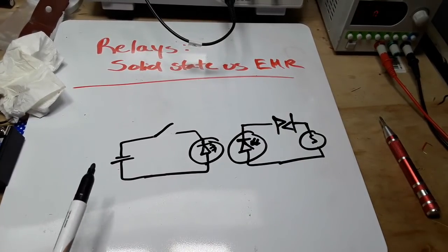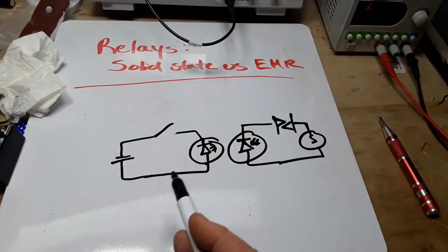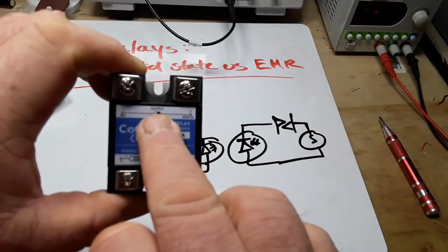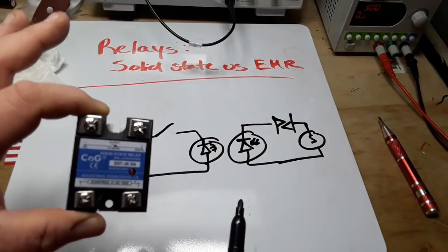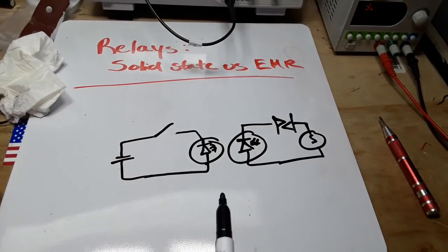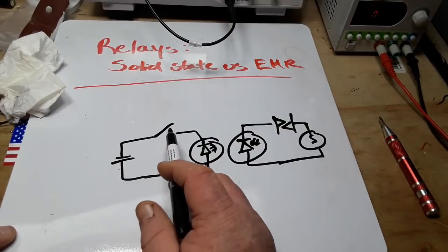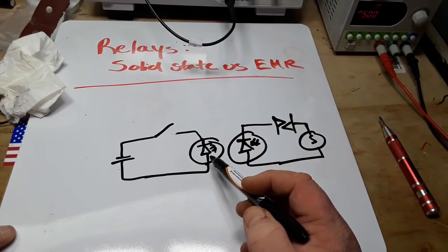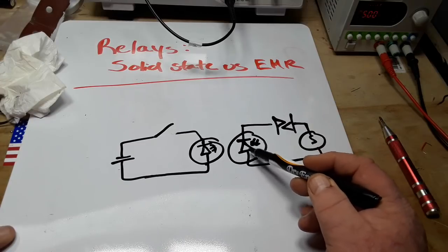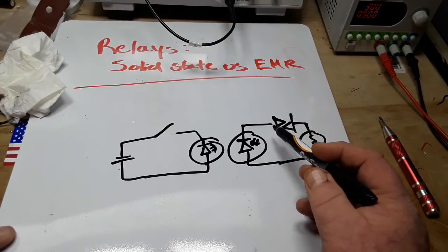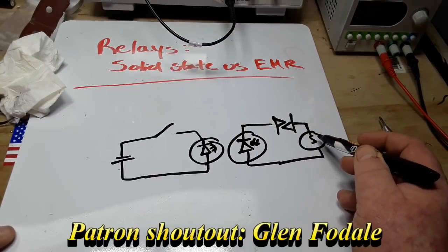Now here's a simple diagram of our solid-state relay. This one is a particular one for AC. Your solid-state relays are generally either specified AC or DC, unlike electromechanical relays, which can work either way. In this case, on the control side, we have a switch that basically just turns on and off an LED. Then we have the photovoltaic cell which receives that light and energizes a triac that switches the load on or off.